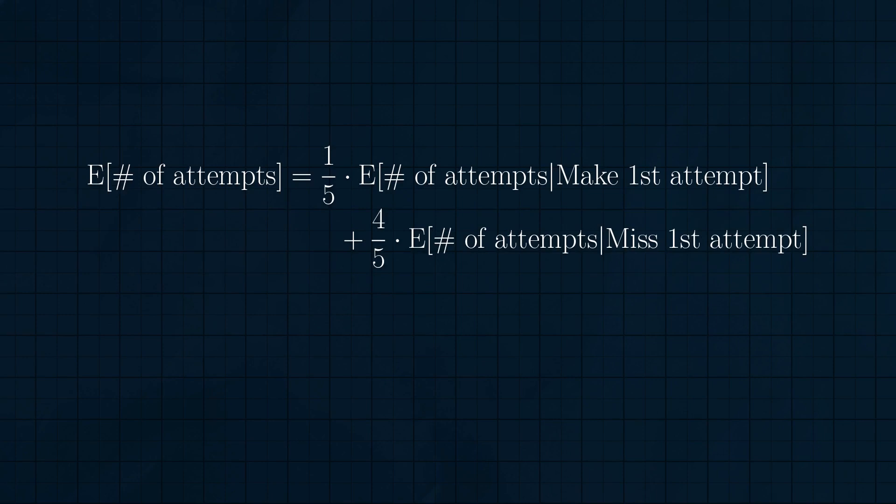Now let's figure out the bonus problem, where Danielle instead shoots until she makes two half-court shots in a row. Danielle has a 1 in 25 chance of making two half-court shots in a row, so maybe our intuition would say it would take about 25 attempts on average. Again, that's just an intuition. We can generalize the recursive approach we tried earlier to get a more rigorous solution. Let's break down the expected value in terms of the result of Danielle's first attempt. The expected value of the number of attempts equals one-fifth times the expected value of the number of attempts given Danielle makes her first shot, plus four-fifths times the expected value of the number of attempts given Danielle misses her first shot.